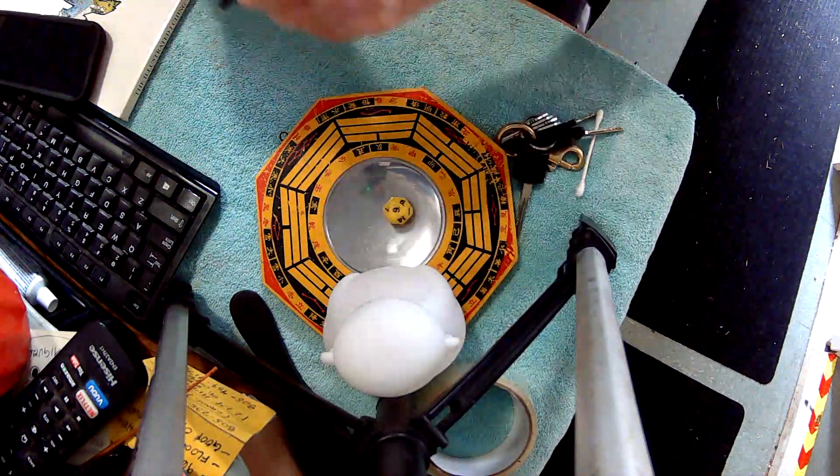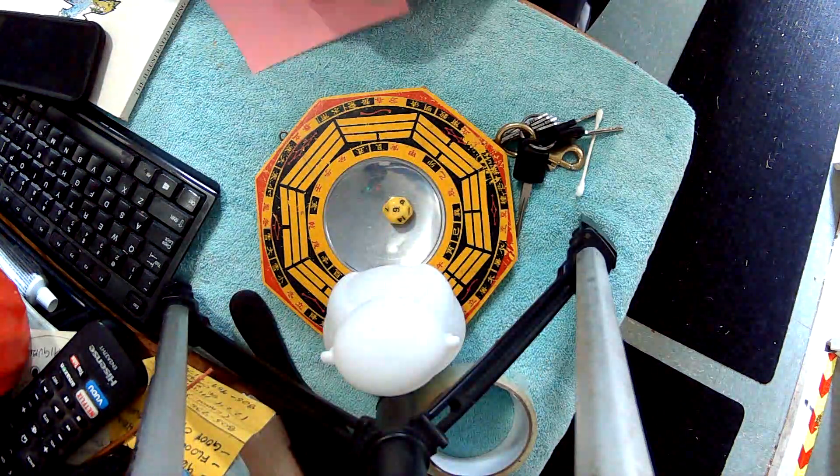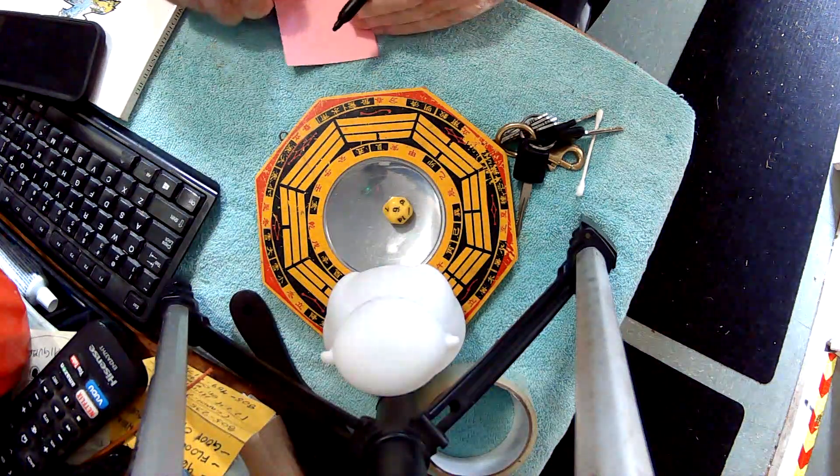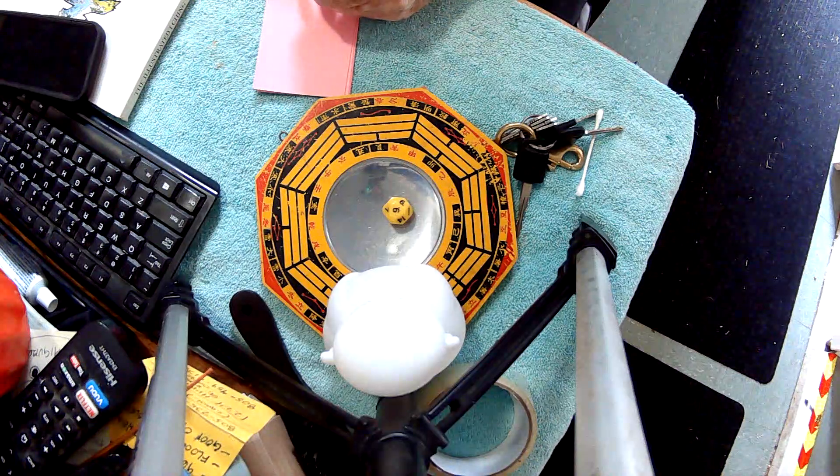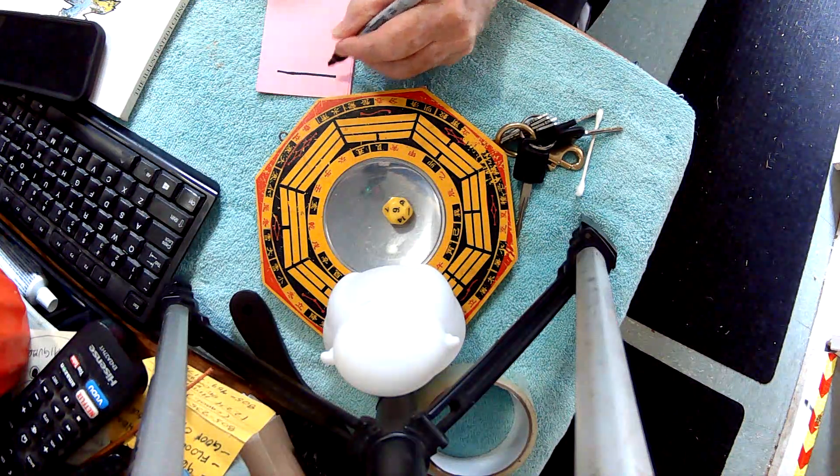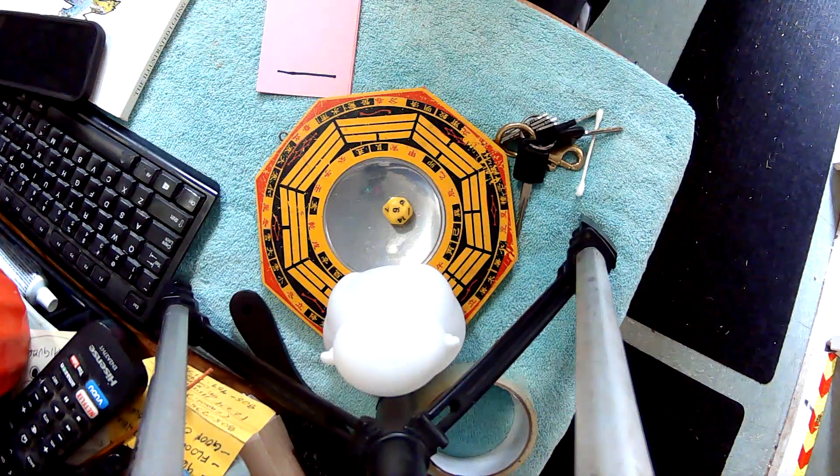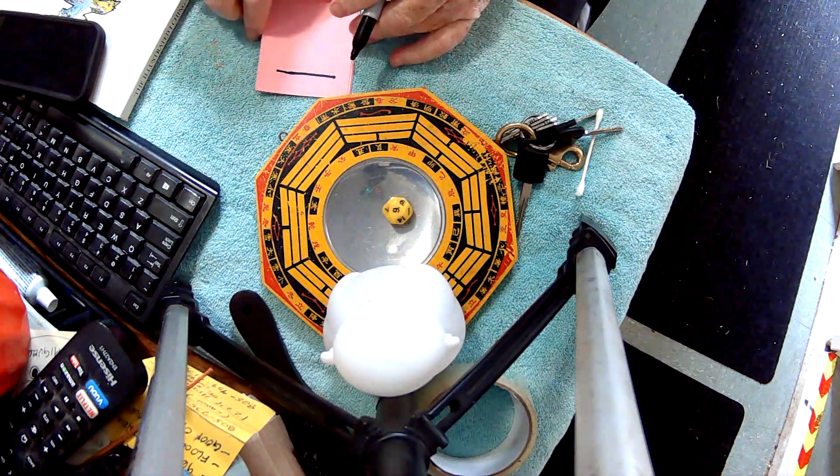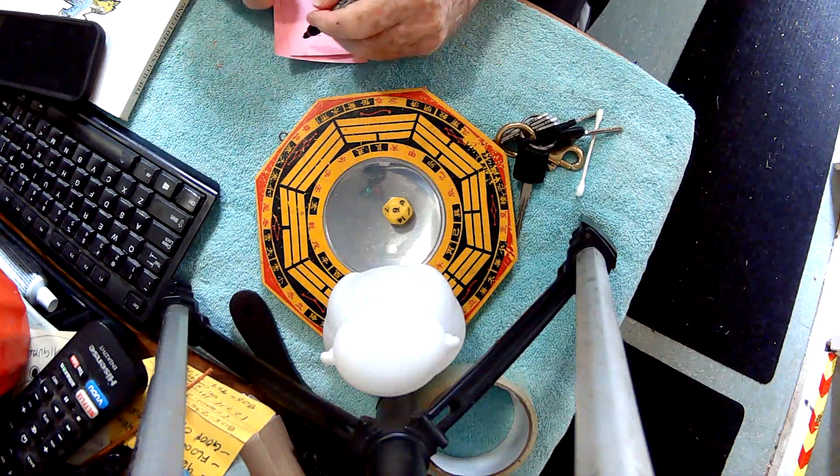Nine. Let me get a card here. Okay, from the bottom up, the hexagram starts with nine, which is a yin line. Nine, which is a yin line.